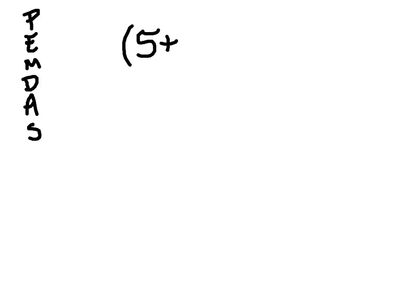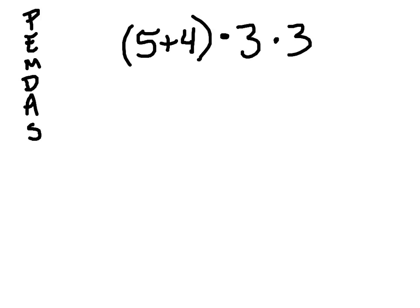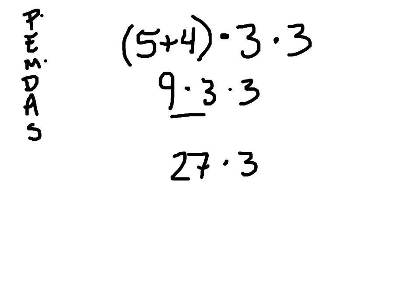Did you follow that? Let's do this one. I'm writing PEMDAS on my side of the paper — I want you to be doing the same thing on your paper. Let's try (5 plus 4) times 3 times 3. Do we have parentheses? Yes. 5 plus 4 equals 9. So 9 times 3 times 3. No exponents. Now multiplication, left to right: 9 times 3 is 27, times 3 gives a final answer of 81.